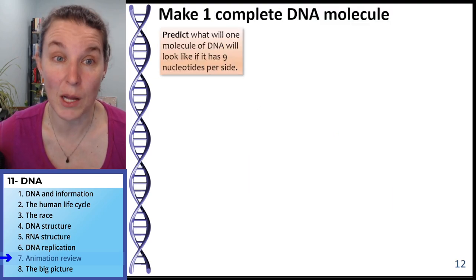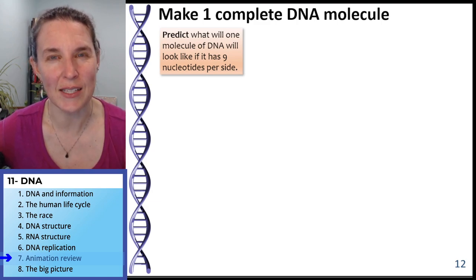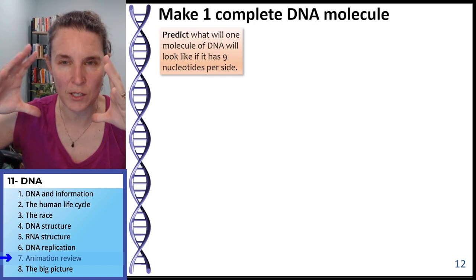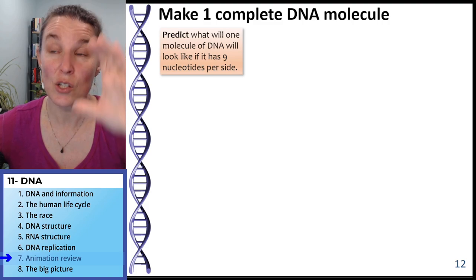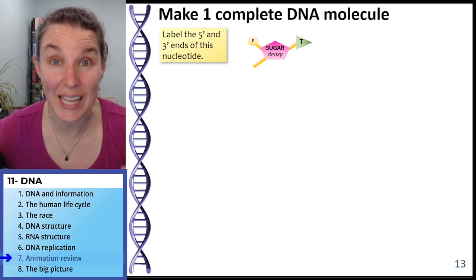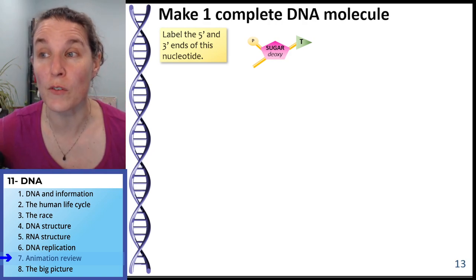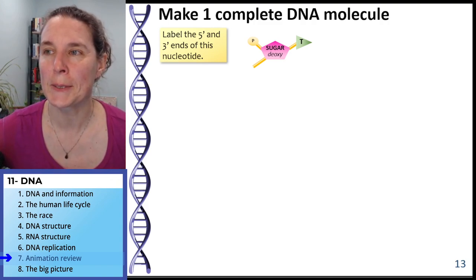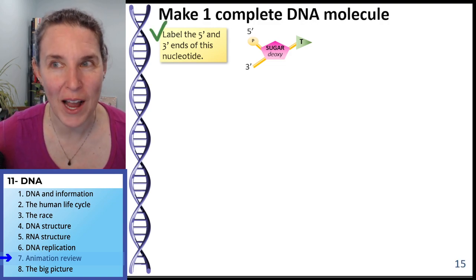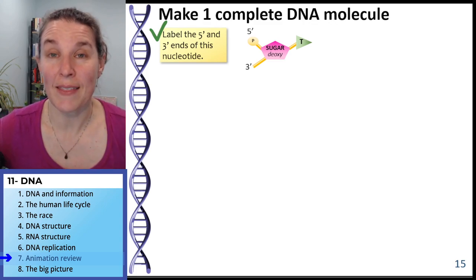We're going to make one complete molecule of DNA. Here's the question. Predict what one molecule will look like if it has nine nucleotides per side. If you think about using these nucleotide building blocks, predict what that nucleotide is going to look like if we pull together nine nucleotides to build this thing. I'm going to start us off with the 5 prime. I'm going to label our 5 prime and 3 prime edges.